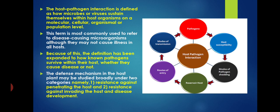Host-pathogen interaction is defined as how microbes, viruses, and bacteria sustain themselves within the host organism at the molecular, cellular, and population level. These pathogens are very microscopic organisms that become more dangerous due to the huge number of microbes attacking the host plant. Host plants — even advanced autotrophic organisms like monocots and dicots — get disease because these microorganisms attack in enormous numbers.